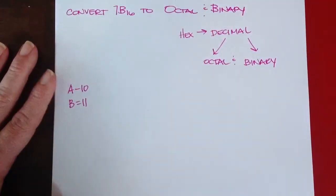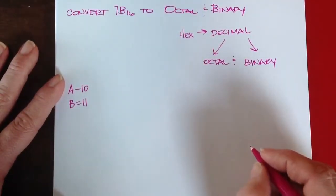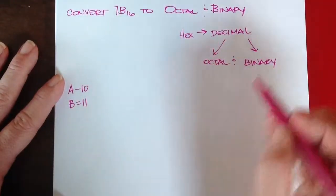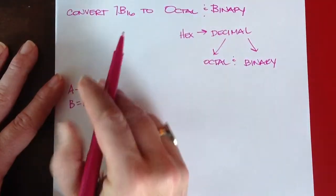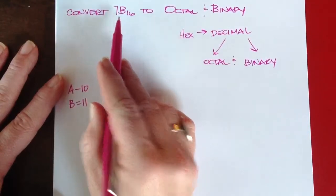If I want to get it into octal and binary, the easiest way to do that is to take these numbers and write them in binary.